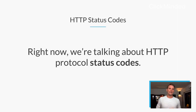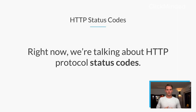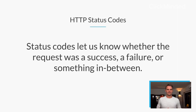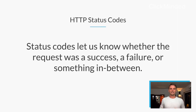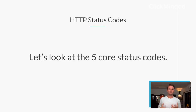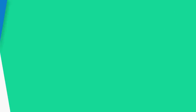So we're talking about HTTP protocol status codes. A client makes a request to the server — what happens next? Status codes let us know whether the request was a success, a failure, or something in between. That's what an HTTP status code is. Let's take a look at the five core status codes next.